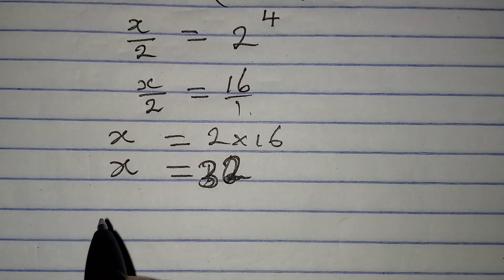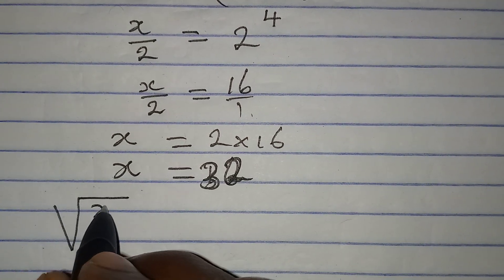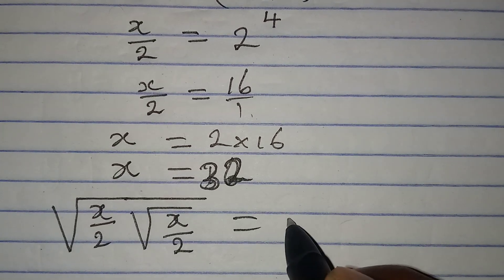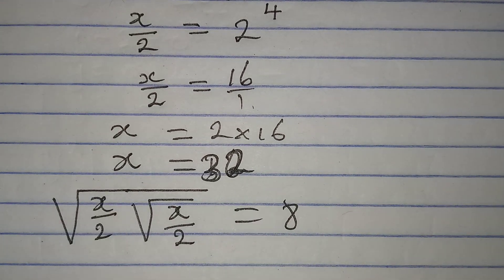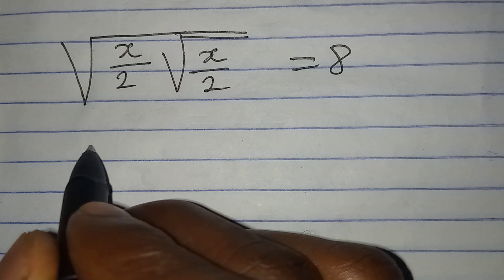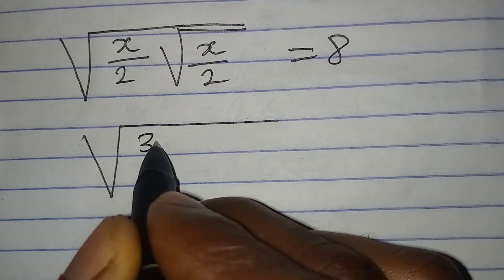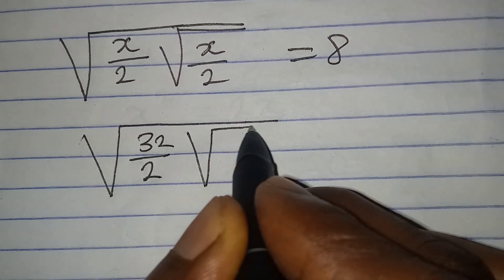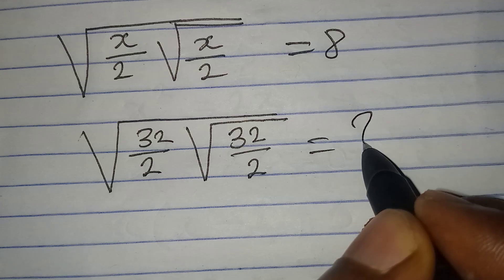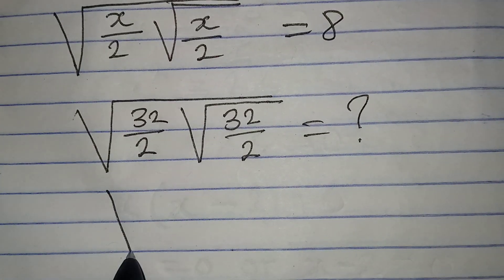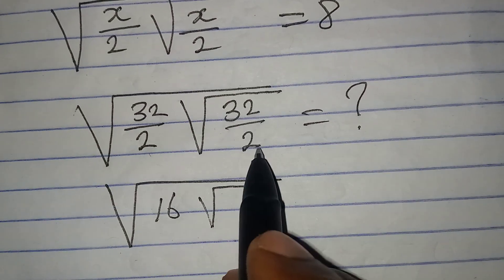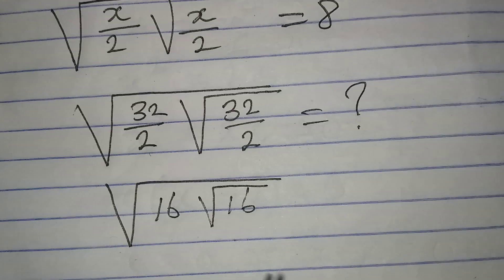Let's check by substituting into the original equation: square root of x over 2, with square root of x over 2 on the inside, equal to 8. Our x is 32. So I write 32 in place of x: square root of 32 over 2, then 32 over 2 again inside. In the square root, 32 divided by 2 gives 16, and the inner 32 divided by 2 gives another 16.